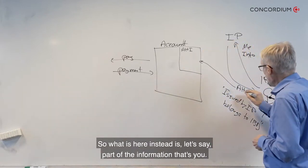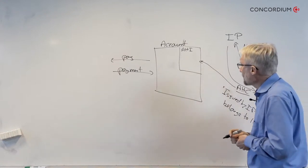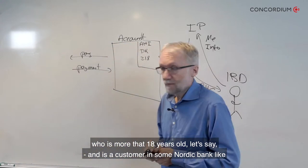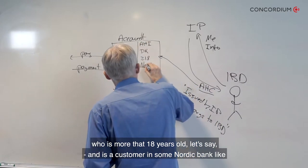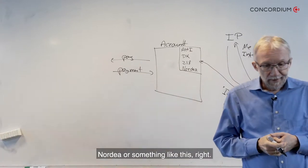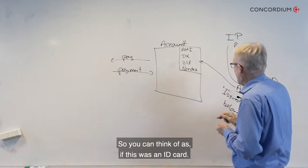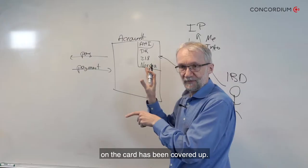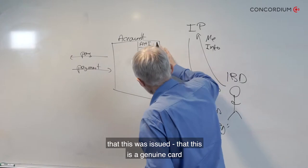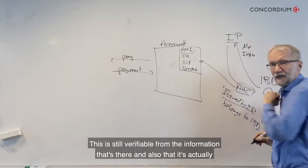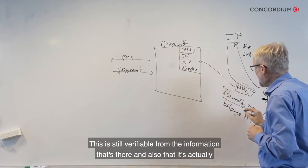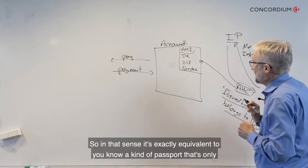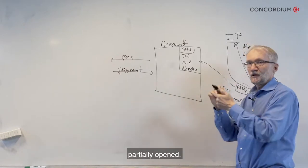What is included instead is only part of the information. For instance, you could choose to reveal that you are a Danish citizen, over 18 years old, and a customer in a Nordic bank like Nordea. You can think of this as an ID card where parts of the information have been covered up — you can still verify it's a genuine card issued by the identity provider, and that the account was opened by someone who actually owned the underlying certificate. It's exactly equivalent to a passport that's only partially shown.